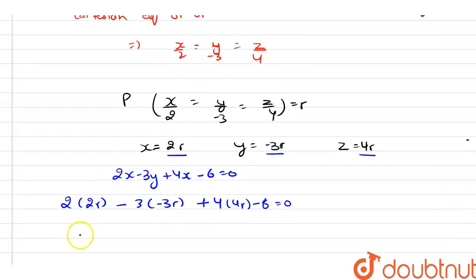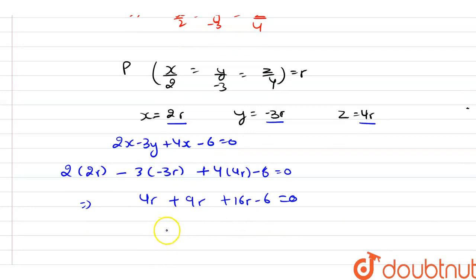So now after solving it further we have 4r + 9r + 16r - 6 = 0. So now from here we have a value of r, and that is equal to 6/29.